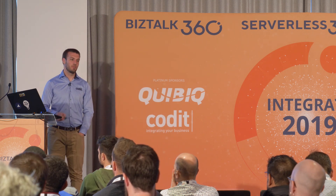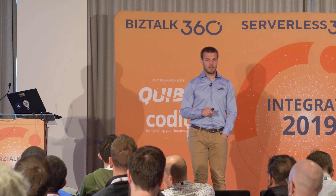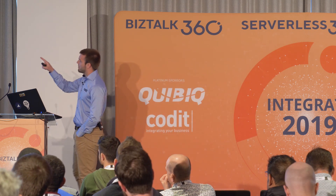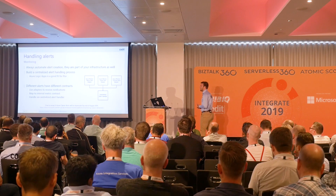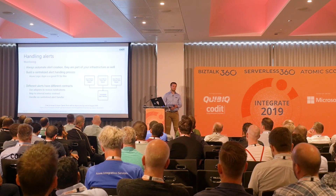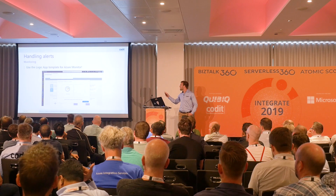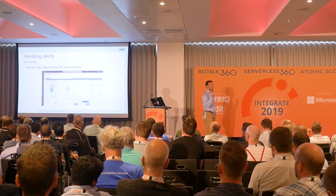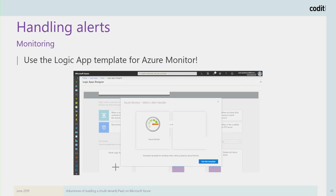If you're still using Azure classic alerts, it's time to move — it's deprecated, extended only to August 2019. Azure Monitor now also has the metric alert and a common schema for all notification types. There's a new template in Logic Apps that gives you a request trigger with the contract of the default metric schema, so you can get started easily. Also, there's now an Azure Monitor common schema — you need to decide which to use, I'm still using the separate approach.